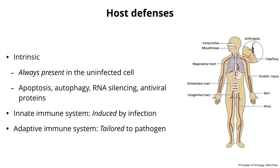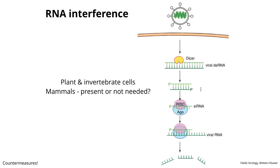I'll give you a couple of examples of intrinsic defenses and how viruses can overcome them. The innate immune system, by contrast, has to be induced by infection—viruses are sensed by molecules in the host cell, and the host then responds by making a variety of molecules with antiviral properties. Next time we'll talk about the adaptive immune system, tailored to the pathogen. Intrinsic and innate systems are not tailored to a specific virus; they inhibit most viruses. But the adaptive system—antibodies, T cells, and B cells—is tailored to the specific pathogen.